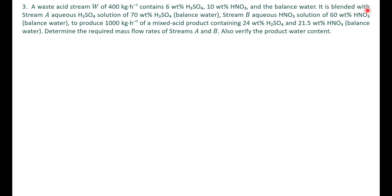This stream is blended with stream A — an aqueous sulfuric acid solution of 70 weight percent, so 30 percent of stream A is water. Stream B is an aqueous nitric acid solution of 60 percent nitric acid, so the remaining 40 percent is water. We are asked to produce 1000 kg/hr of mixed acid product at given concentrations.